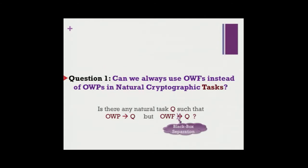Anything that we wanted to do based on one-way permutations, we ended up doing based on one-way functions in many cases. So one question we have in this work is: is this always going to happen, or are there outliers? Is there some natural cryptographic task you can do based on one-way permutations but not one-way functions? To prove impossibility formally, we restrict ourselves to the black-box construction and separation framework.